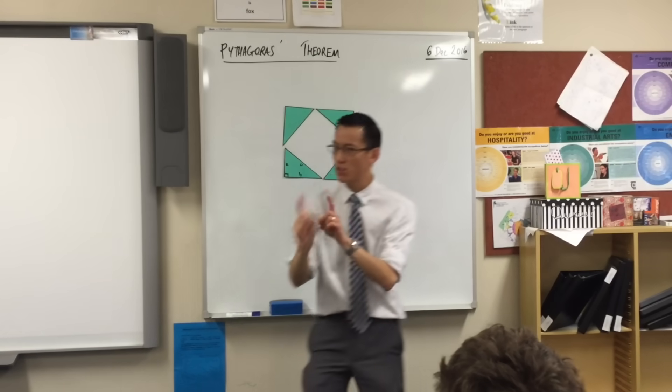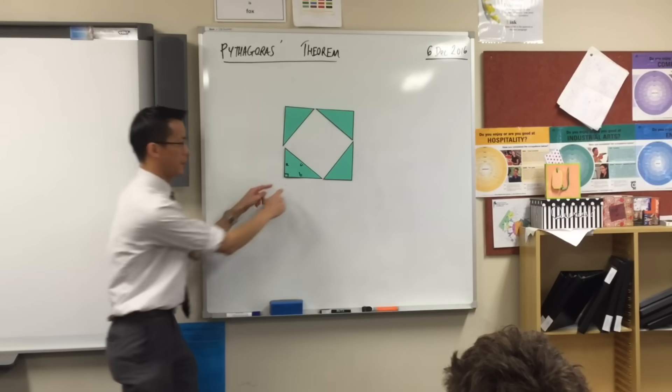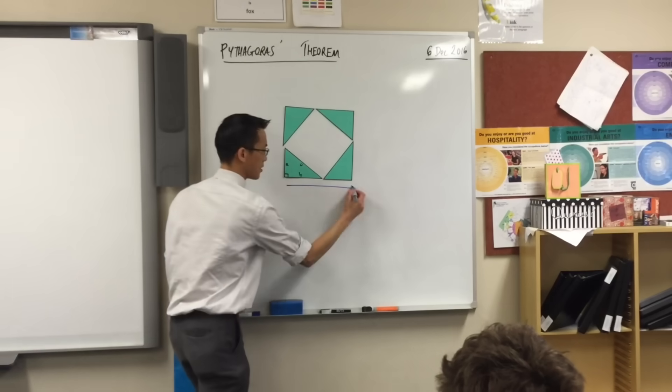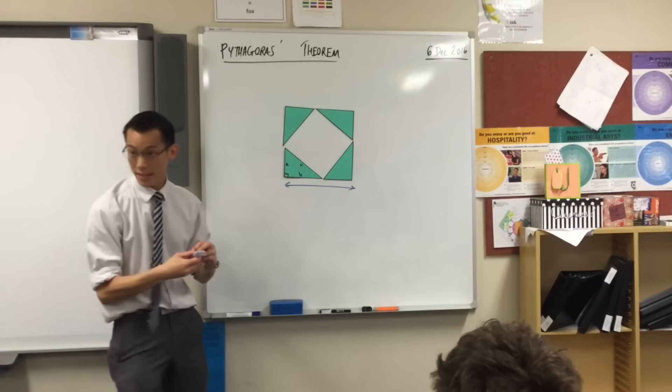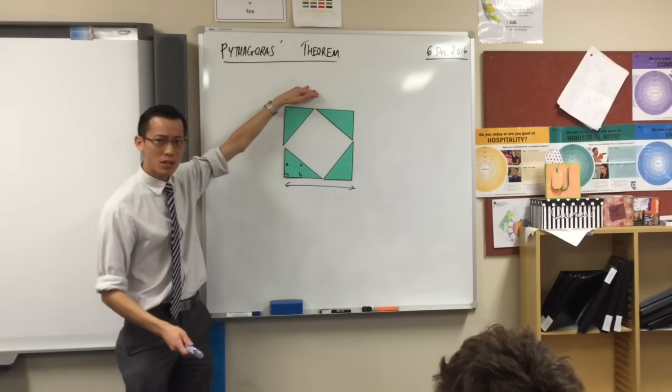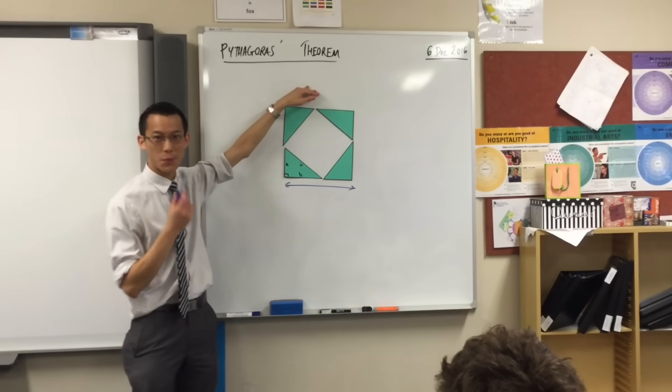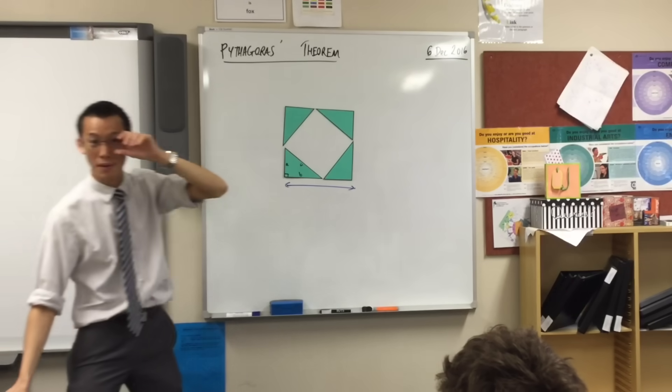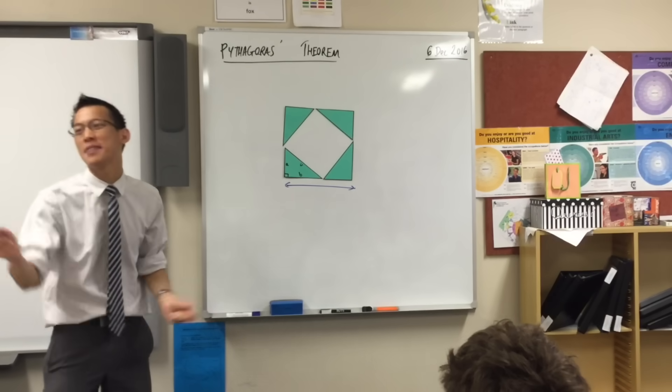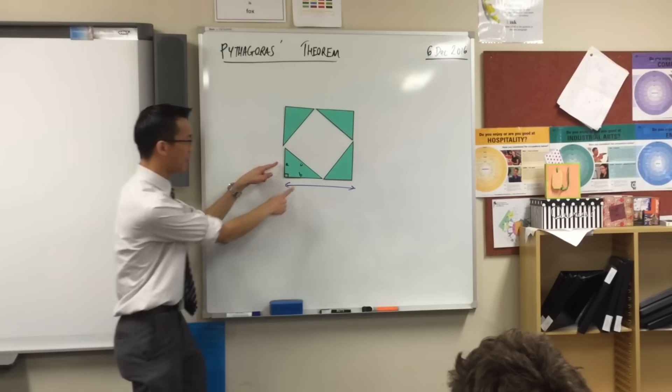So I've got a right angle here, which means I've got one here, and here, and here. Those are important, but they still don't tell me that all of the sides, right, like this one here. This is a side. It doesn't tell me that that side is the same as this one, and this one, and this one. Can anyone see how we can know? Let me help you out a little bit, okay?